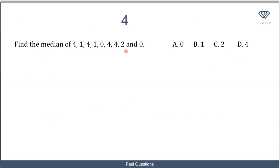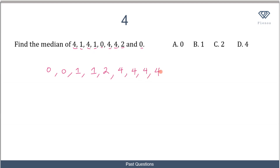In the next question, we are asked to find the median of this distribution. To find the median, we first arrange the numbers in ascending order. We have two zeros, two ones, one two, and four fours. Listing them out: 0, 0, 1, 1, 2, 4, 4, 4, 4. Counting confirms we have 9 numbers — the same as in the original distribution.